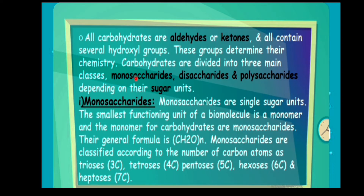The compound has a chemical property called a functional group. Some physical properties can also be used to identify them. For example, alcohol, ketone, or carboxylic acid — each is a functional group. Carboxylic acid has the functional group COOH. These functional groups affect properties like solubility, boiling point, and melting point.